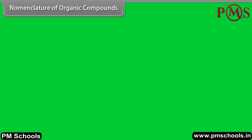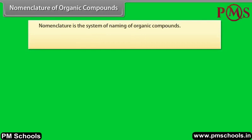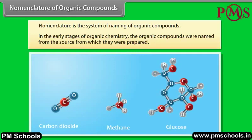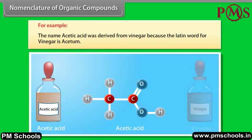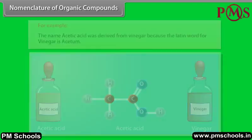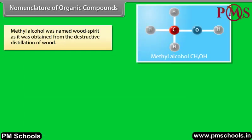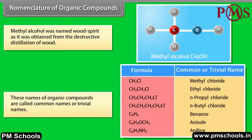Nomenclature of organic compounds. Nomenclature is the system of naming organic compounds. In the early stages of organic chemistry, compounds were named from the source from which they were prepared. For example, acetic acid was derived from vinegar because the Latin word for vinegar is acetum. Methyl alcohol was named wood spirit as it was obtained from the destructive distillation of wood. These names are called common names or trivial names.